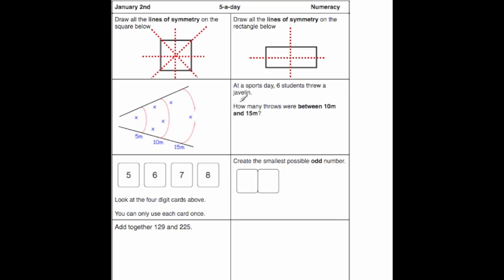The next question says at a sports day six students threw a javelin. You can see one, two, three, four, five, six crosses, and the crosses represent where the javelin has landed. It says how many throws were between 10 and 15 meters. Here's 10 and here's 15, and we've got two crosses in that region, so there are two throws between 10 and 15 meters.